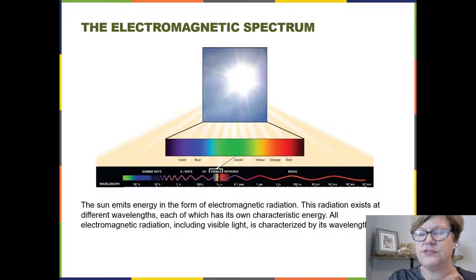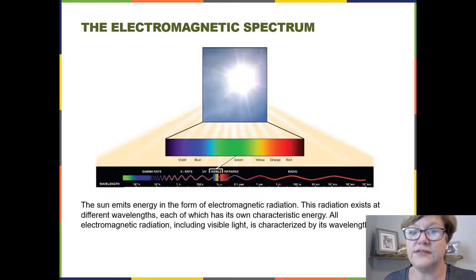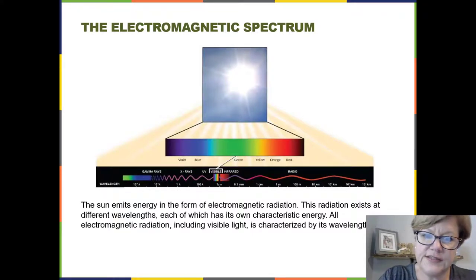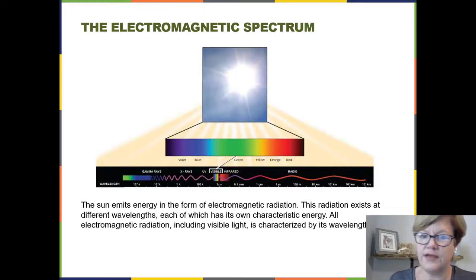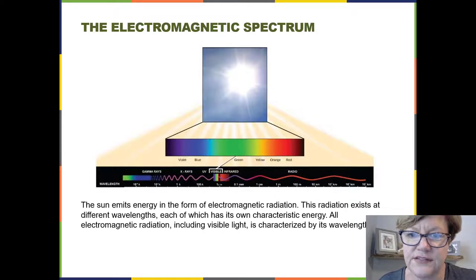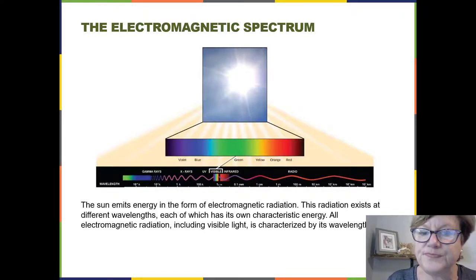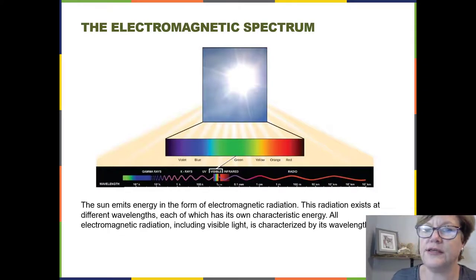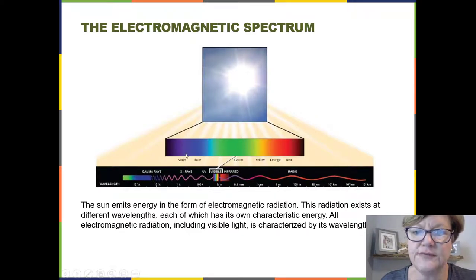On the electromagnetic spectrum, radio waves have very long wavelengths. As wavelengths get smaller, you cross into different types: infrared, then visible light — the only type you can actually see — then UV rays, X-rays, and gamma rays. Visible light falls in a pretty narrow range of wavelengths and comes in different colors: red, orange, yellow, green, blue, and violet. Combined, we call it white light.